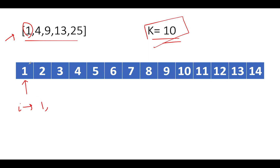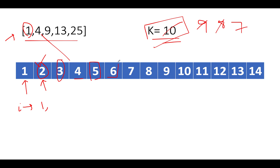Walking through: i=1 is in the array, so skip. i=2 is not in the array, add it, reduce k. i=3 is not in the array, add it, reduce k. i=4 is in the array, skip. i=5, 6, 7, 8 are not in the array, add each and reduce k. i=9 is in the array, skip. i=10 is not in the array, consume it, k reduces to 3.